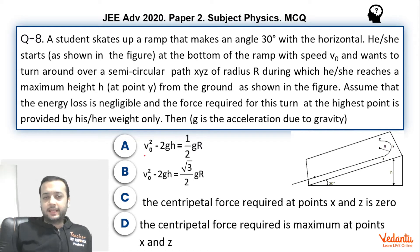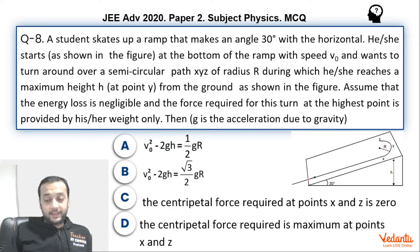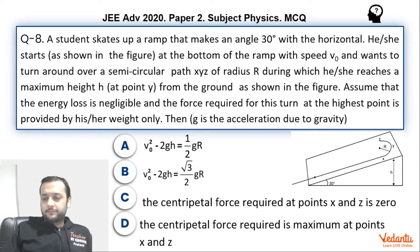IIT had given options A and D to be right, but let us see why in my opinion option D should not be right. First, let us look at what is happening here. A particle has been launched at an initial velocity of V₀ from the bottom of an inclined plane of inclination 30 degrees.